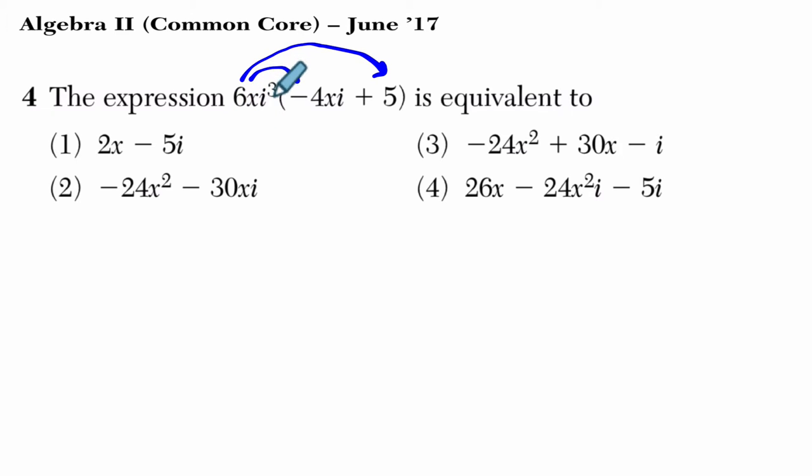Well, 6xi³ times -4xi. We first want to multiply our coefficients, 6 times -4, that's -24. Then x times x is x², i³ times i is i⁴, plus in this case it's just 5 times 6, which is 30, and we have x times i³.